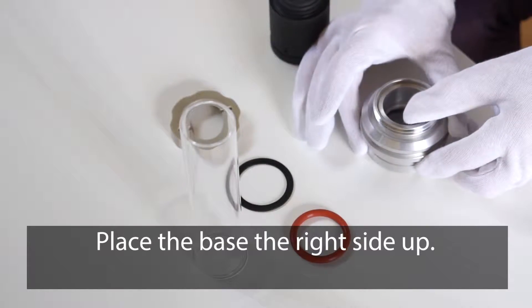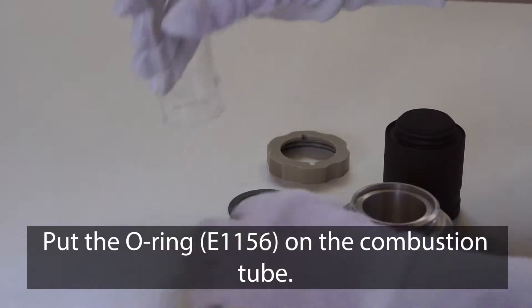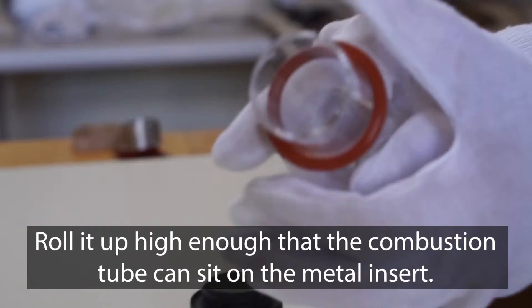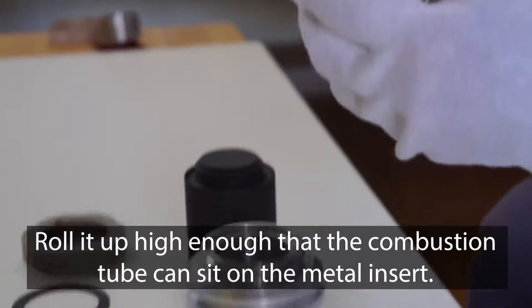Place the base the right side up, put the o-ring on the combustion tube, rolling it up high enough so that the combustion tube can sit on the metal insert.